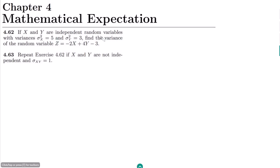If x and y are independent random variables with variances σx² = 5 and σy² = 3, where σx² is the variance of x and σy² is the variance of y, we have to find the variance of the random variable z = -2x + 4y - 3. We have to keep in mind that the two random variables are independent of each other — that is the key trick we are going to utilize here.